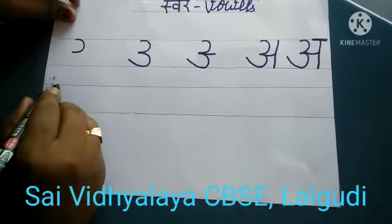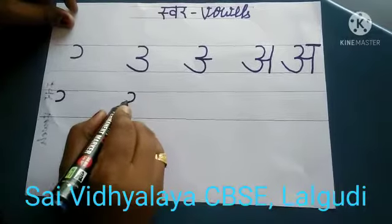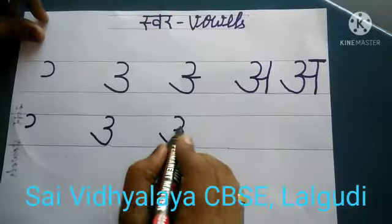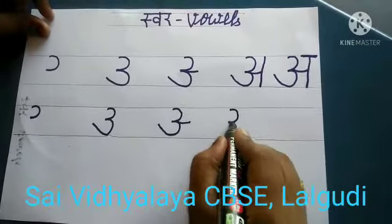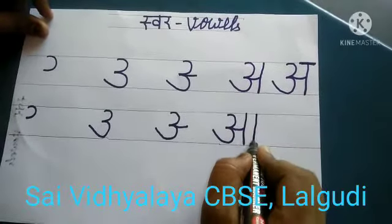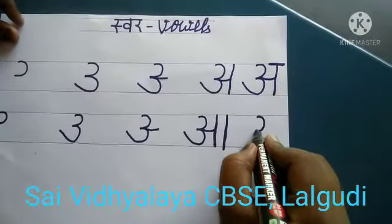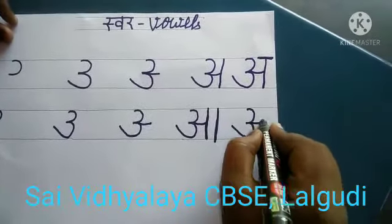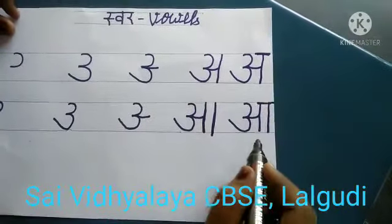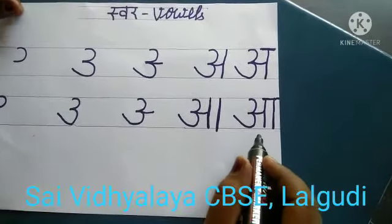The next curve. Another curve. Small sleeping line. Then put the standing line. Two standing lines. What is this letter? Long sound of letter A.